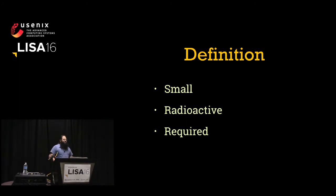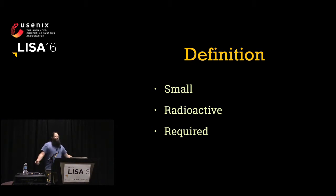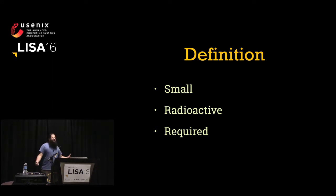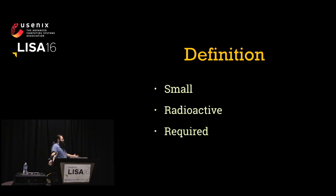Second, it needs to be radioactive. This means that if an attacker knows it, something bad happens. For example, username: not radioactive, therefore not a secret. Passwords: radioactive, therefore a secret. Finally, they need to be required. In most cases, we're not going to be dealing with things like graceful fallback, nice degradation, retries, etc. If your application doesn't have a password it needs, it can't do its job, basically period.